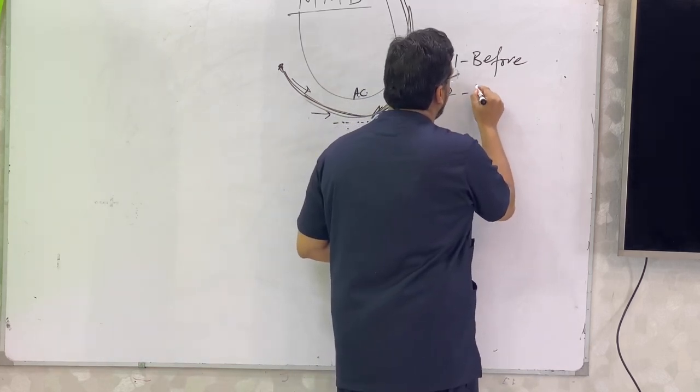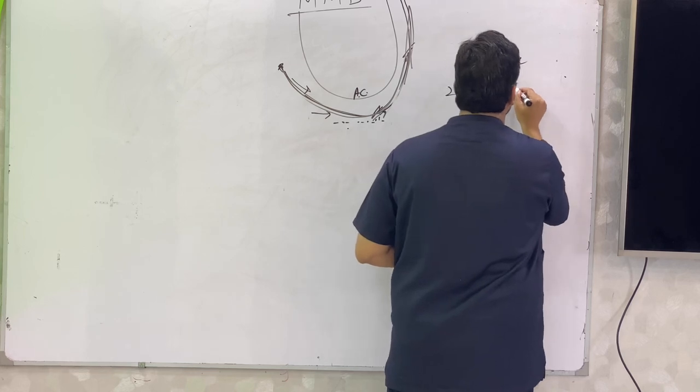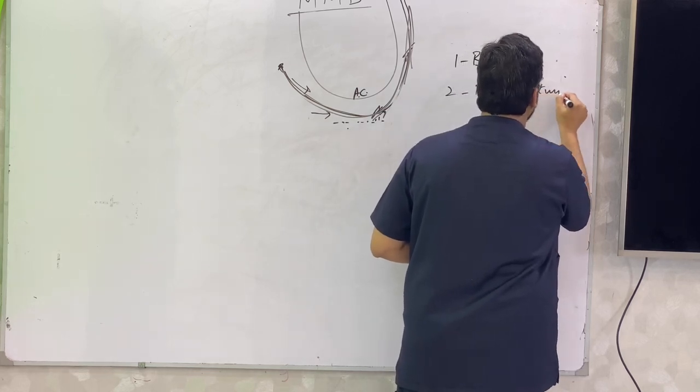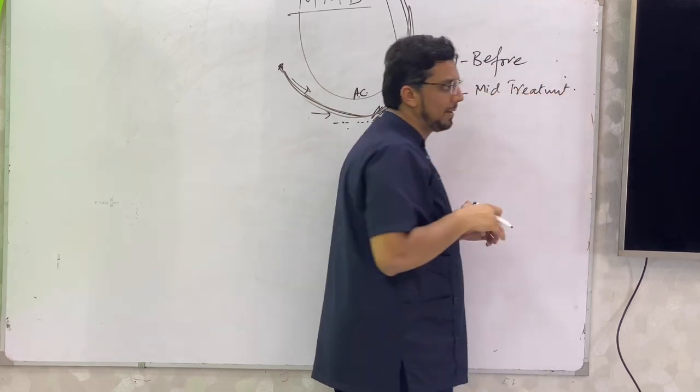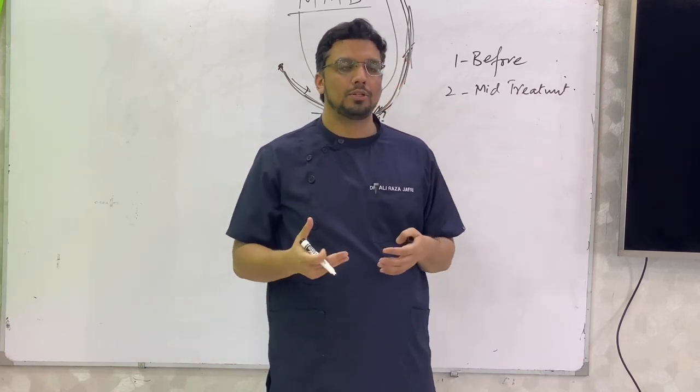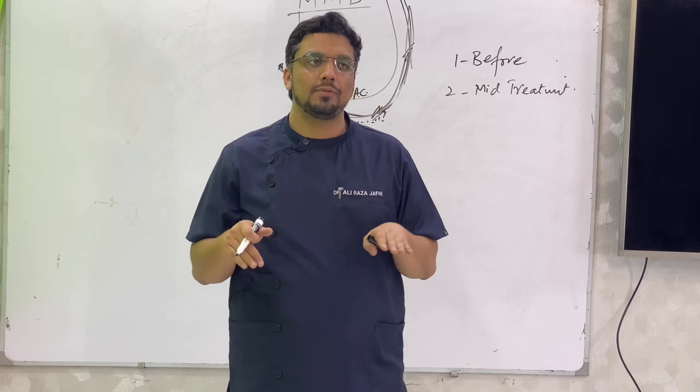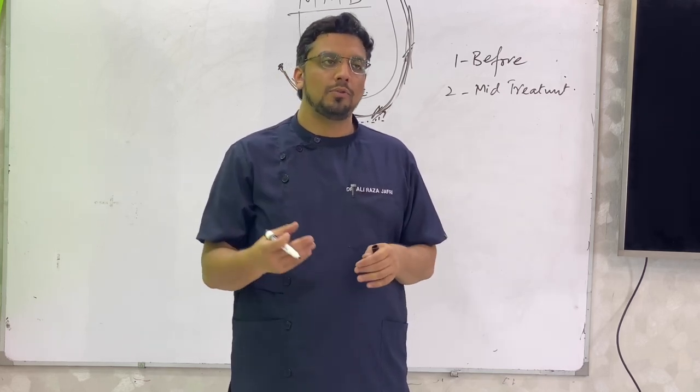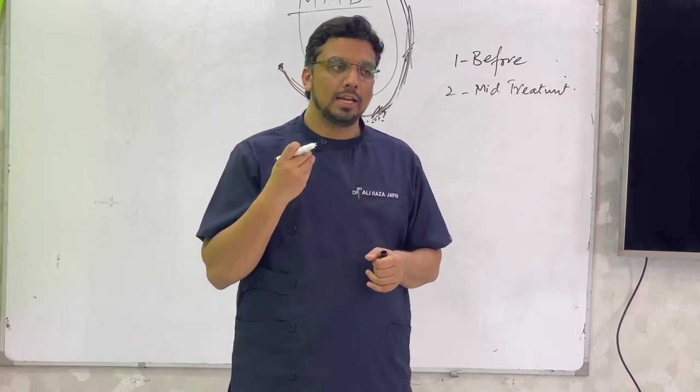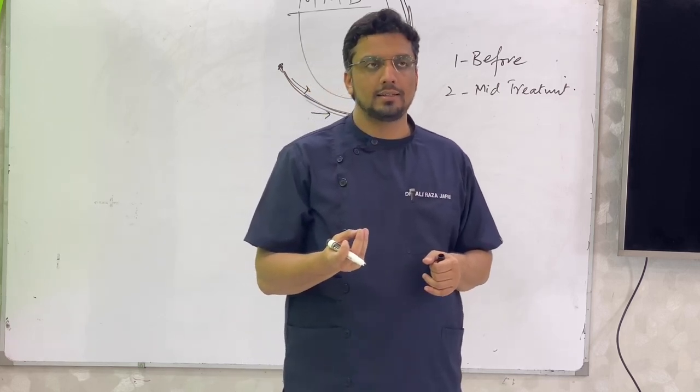Second school of thought is in the mid treatment. Mid treatment means for example you are closing the gap and you have a very thick fibrous tissue and obviously this fibrous tissue will start producing hindrance and this will not allow the closure of the gap. You would have a very inflamed and very thickened tissue in between the centrals as well.